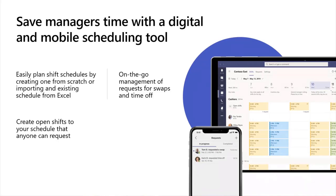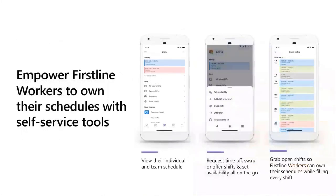For managers, I have an image here showing the desktop and the mobile view. You can import your schedules from an Excel spreadsheet and export back out. We also have the ability to directly build your schedules within the Shifts app. We have Graph APIs where you can import and sync scheduling information from another system of record. As a manager, you can create open shifts for extra coverage needed, and you can manage all employee requests within the application.